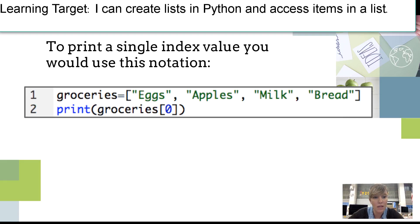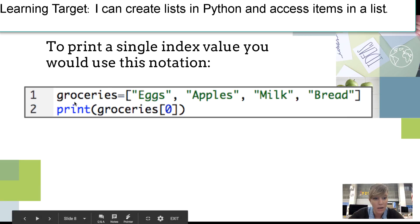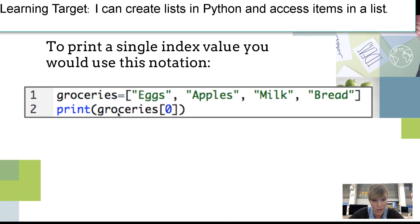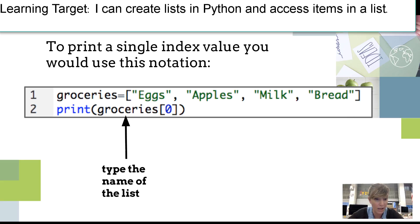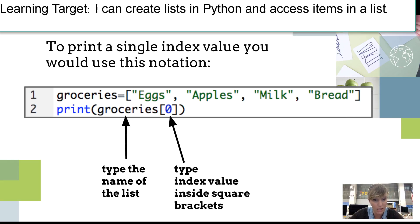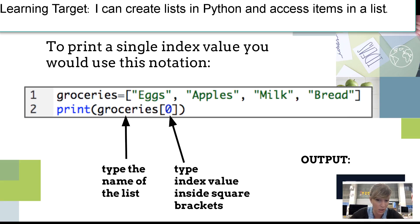When I make this list 'groceries' and ask it to print, I'm not asking for the whole entire thing — if I wanted the entire grocery list I would say it without index notation. I'm telling the computer to print the first item in that list, or the item at index value zero, and it gives me the word eggs. To access one individual item within a list, type the name of the list and right next to it use square brackets with the index value you want, and it will output that item. So I could say one and get apples, two and get milk, and so on.